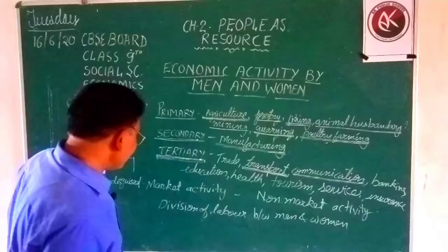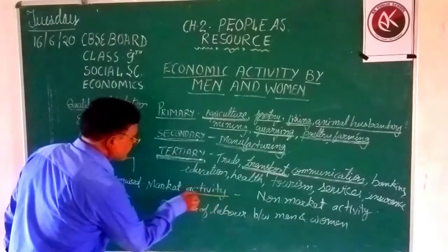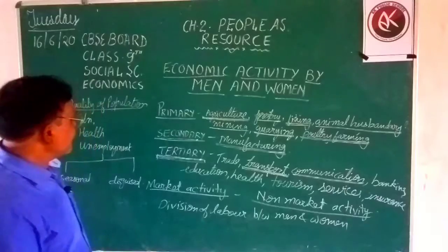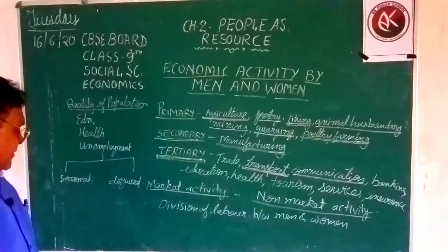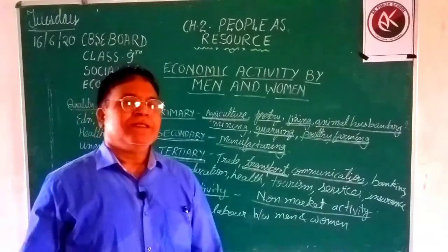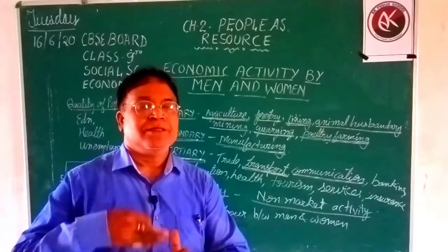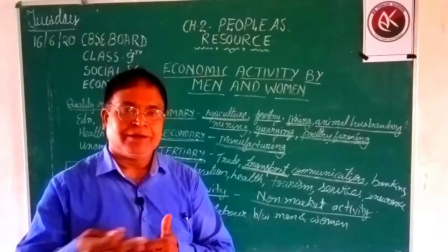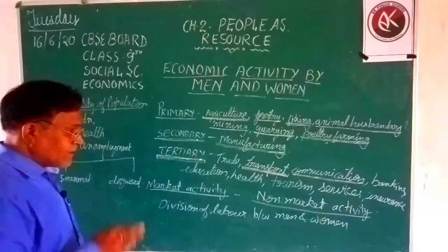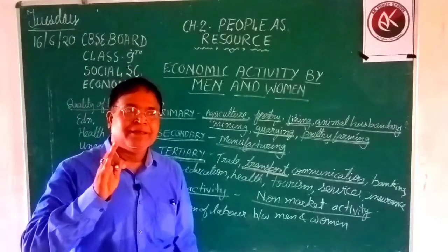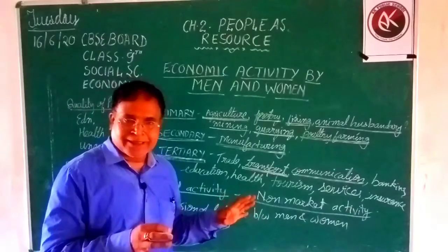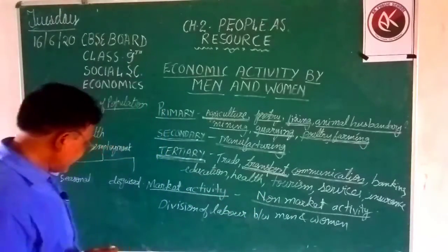I want to discuss some more terms: market activity and non-market activity. Market activities means those finished products which are sold in the market to consumers for profit or payment. Non-market activities means all natural processing in factories, manufacturing, and other things — they fall in the category of non-market activities.